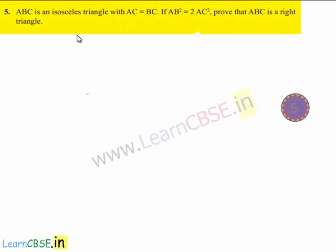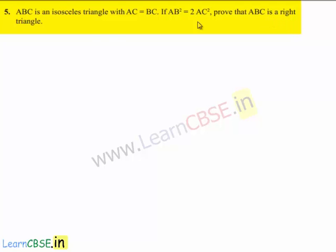Moving on to the fifth question: ABC is an isosceles triangle with AC equal to BC. If AB square is equal to 2AC square, prove that ABC is a right angle triangle. Moving on to the solution.